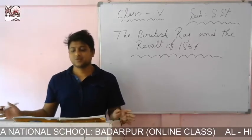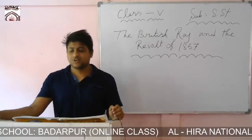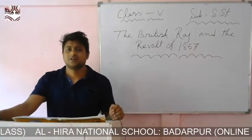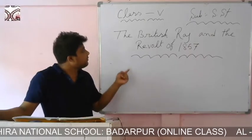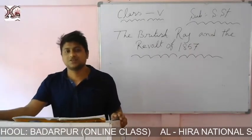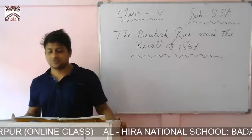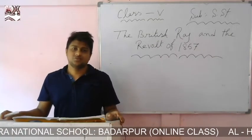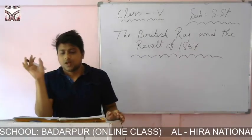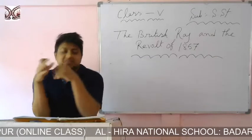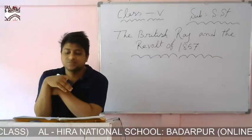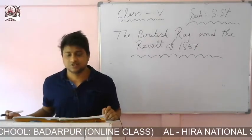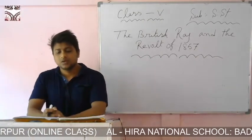Hello students, welcome to my class once again. Today I'm going to discuss a new chapter - Chapter 17, page number 99 in your book. The name of the chapter is 'The British Raj and the Revolt of 1857.' From history today, we are going to know about the revolt of 1857 and the British Raj specifically.